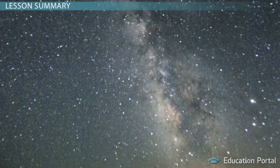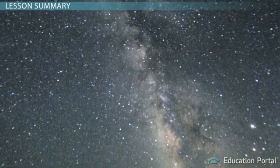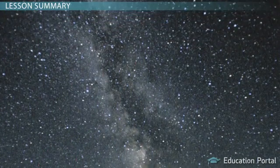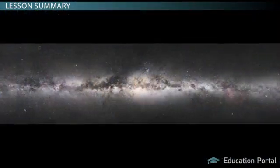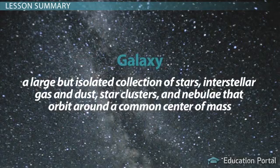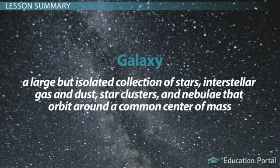The next time you look up at the night sky, you'll know exactly why you see a band of light and a scattering of stars around the sky. You'll also know why that band of light has dark streaks across it — what you're seeing is a big clue to the shape of our galaxy. A galaxy is a large but isolated collection of stars, interstellar gas and dust, star clusters and nebulae that orbit around a common center of mass.